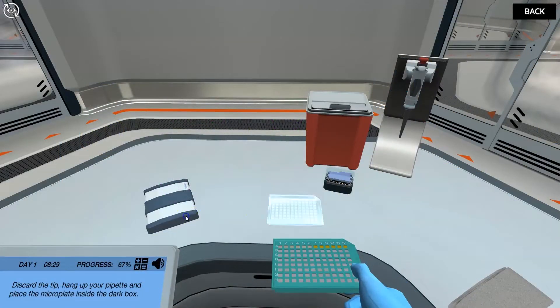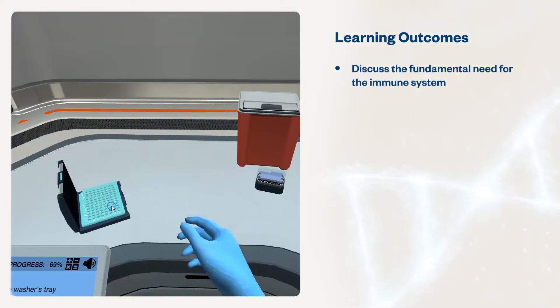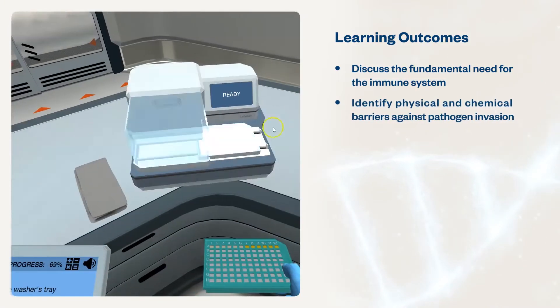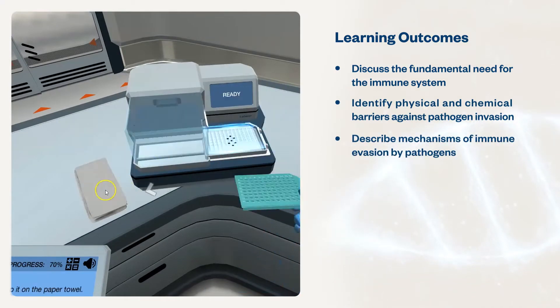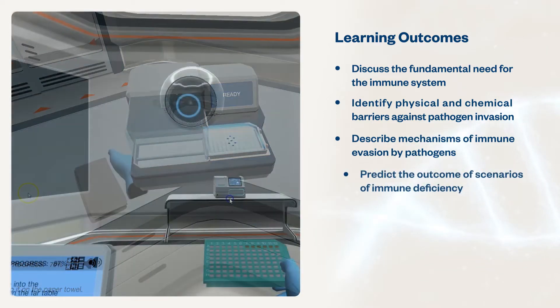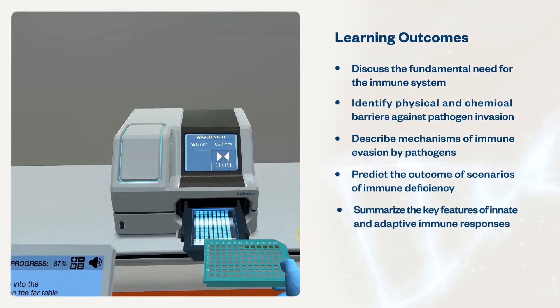These simulations will help students discuss the fundamental need for the immune system, identify physical and chemical barriers against pathogen invasion, describe mechanisms of immune evasion by pathogens, predict the outcome of scenarios of immune deficiency, and summarize the key features of innate and adaptive immune responses.